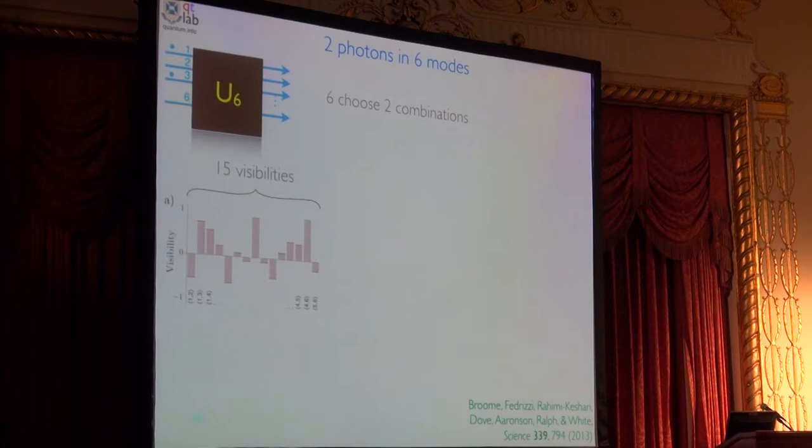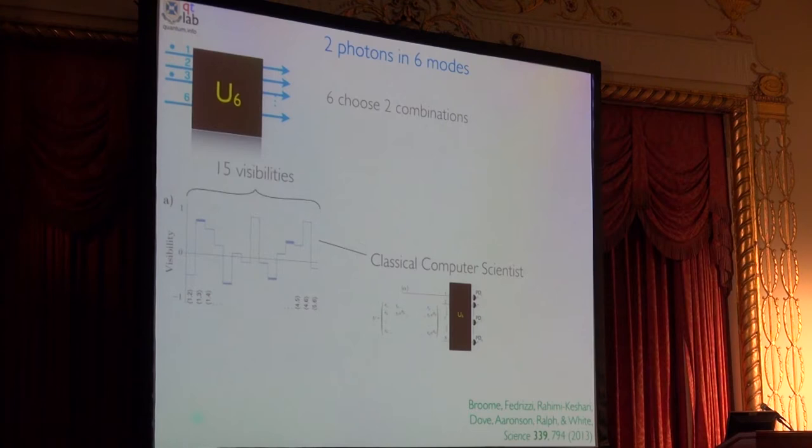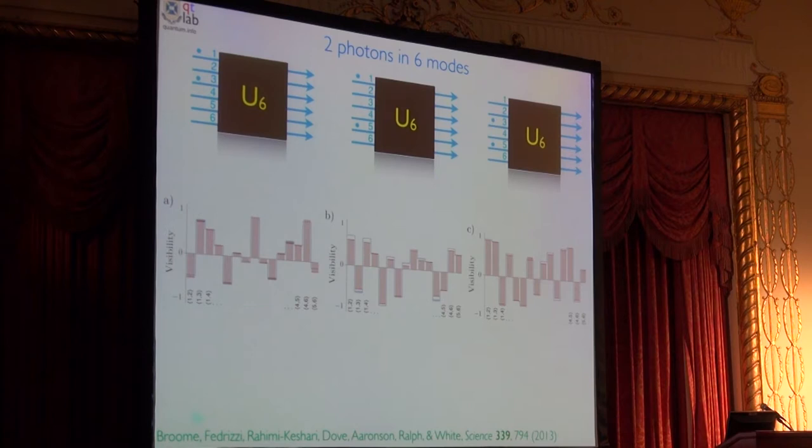That's the 15 visibilities if I'm sending two photons in that a quantum computer scientist would measure. There's kind of little dark bars, top and bottom. They're the errors. That's the 15 visibilities that the classical computer scientist would predict. And again, they've got error bars as well. Remember, that's based on their measurement of the unitary. And you want to see do the two things overlap. And so, we did that. How am I going? Oh, geez. Oh, I'm in trouble. We did that. Two photons. Three photons.